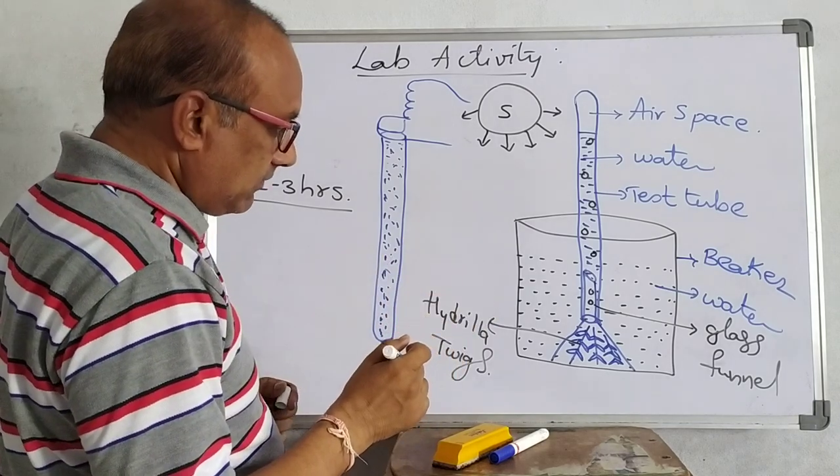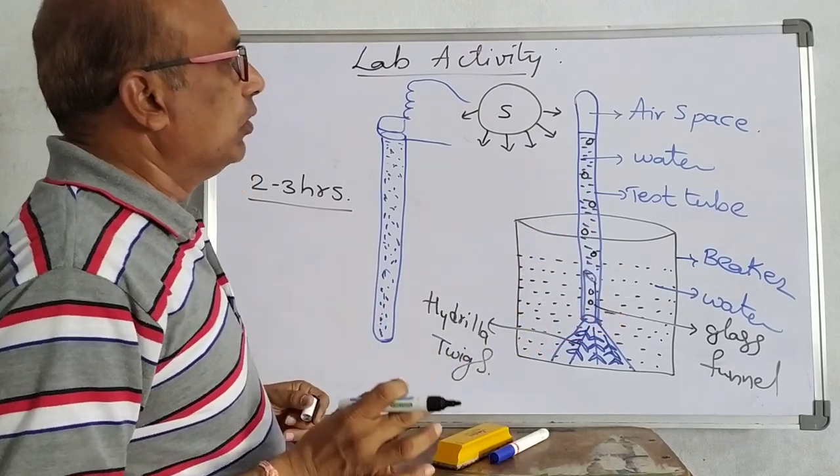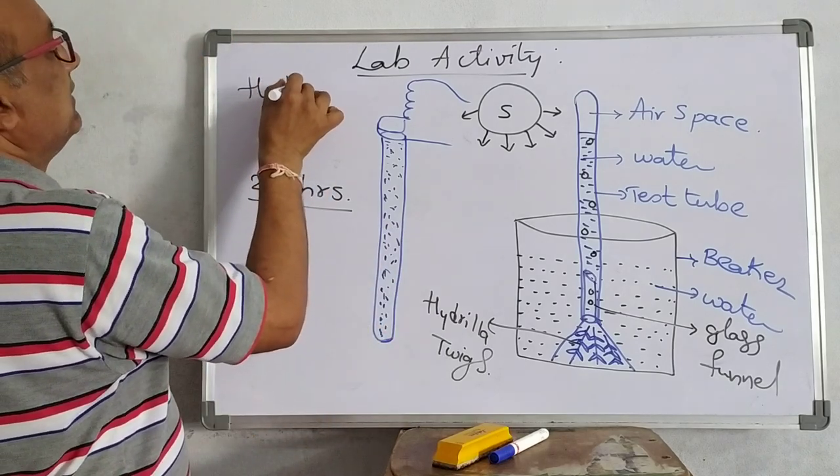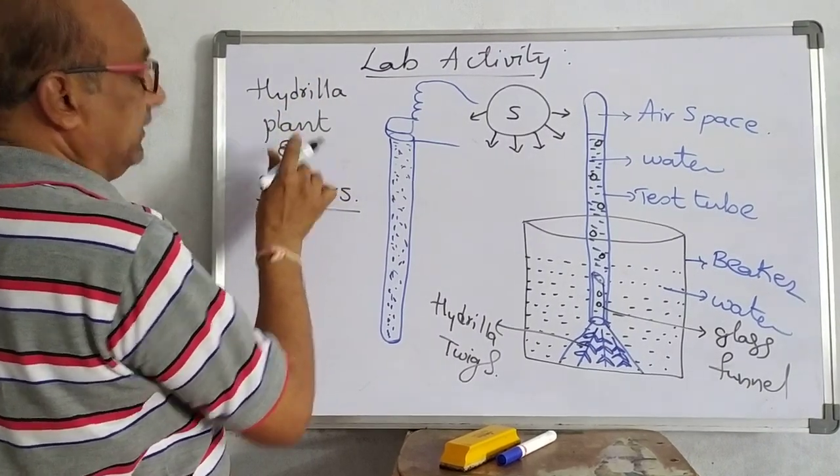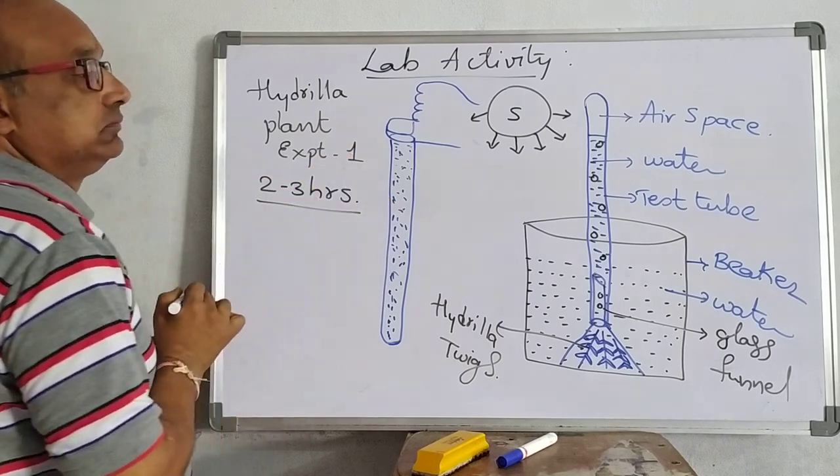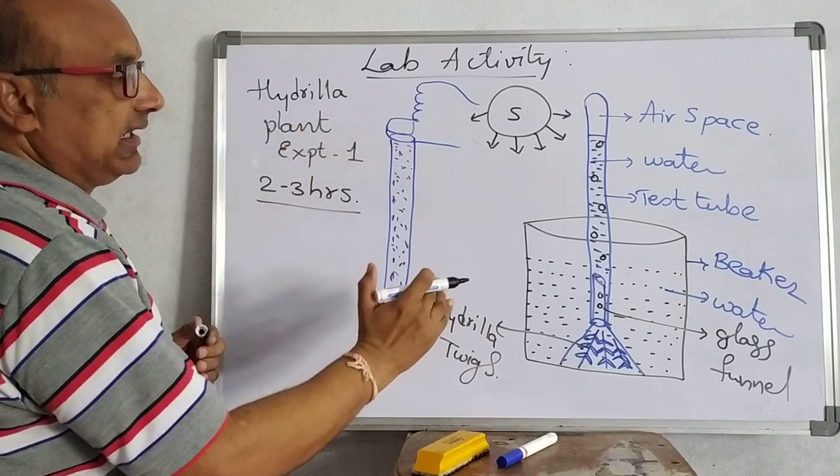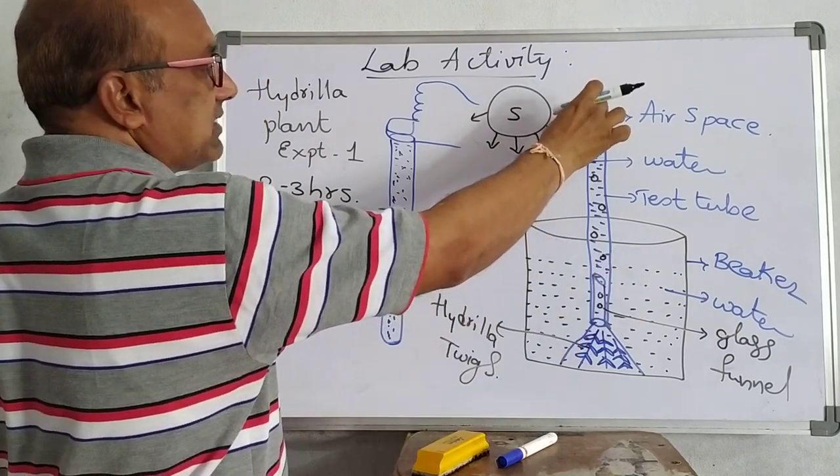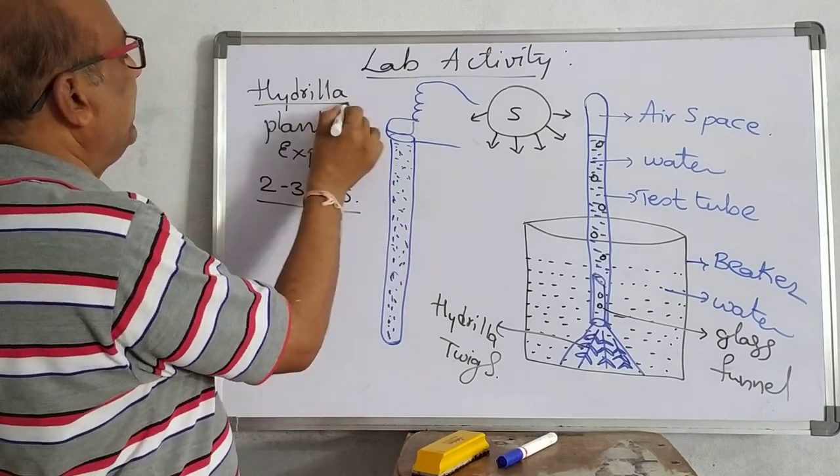And afterwards what happens, we will take in the next coming part two of Hydrilla plant experiment. This plant is named as Hydrilla plant experiment part one. Then remaining we shall discuss in the experiment part two. Till that time you wait and see in the next episode. What are these water bubbles and afterwards what happens? You wait for part two of Hydrilla plant.